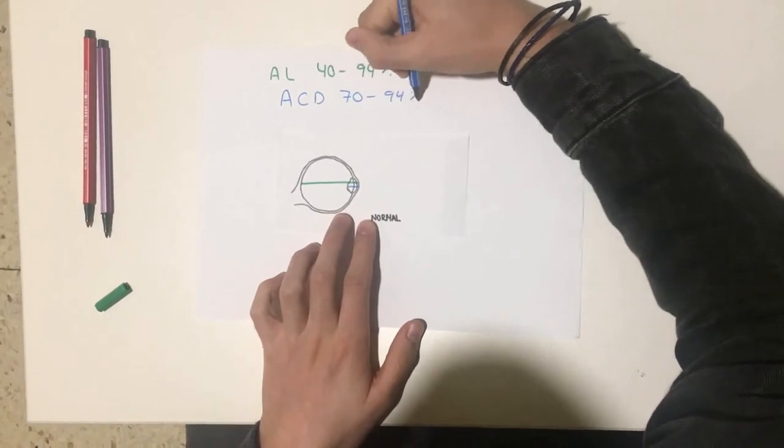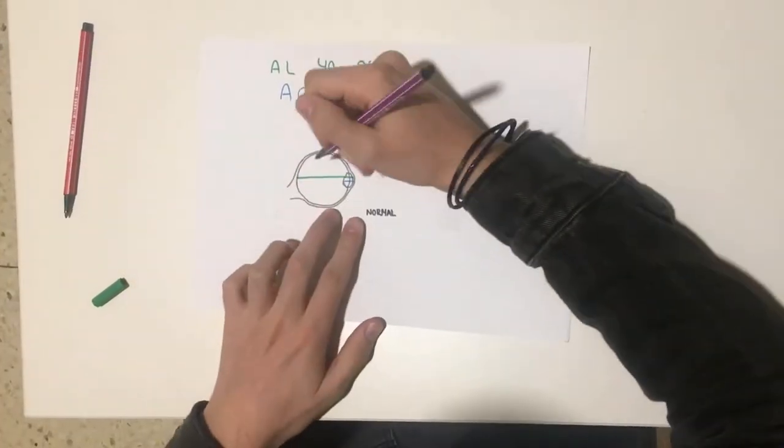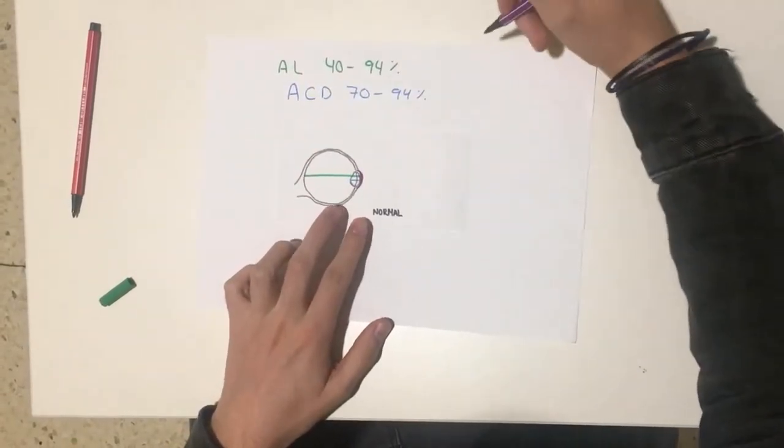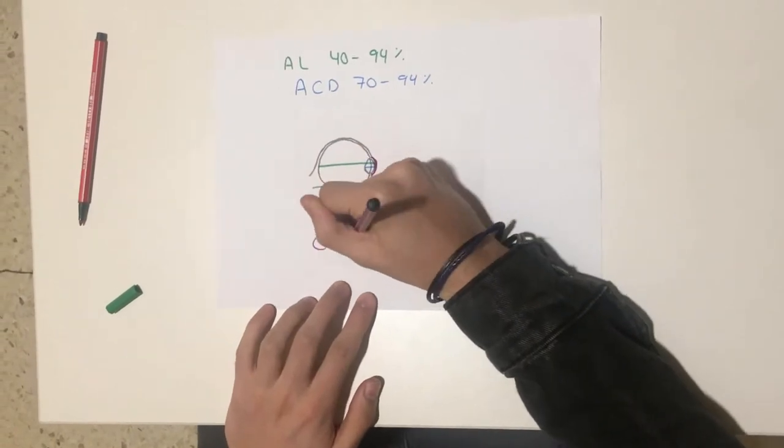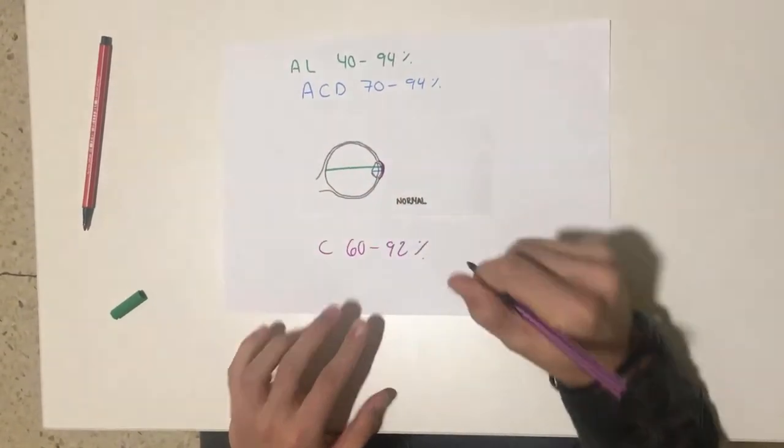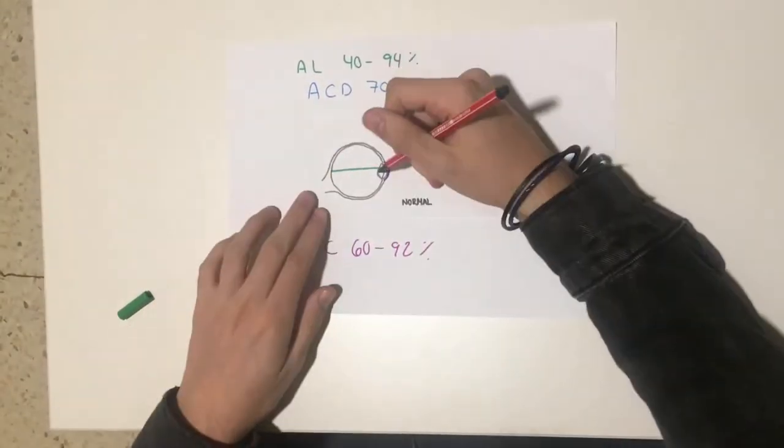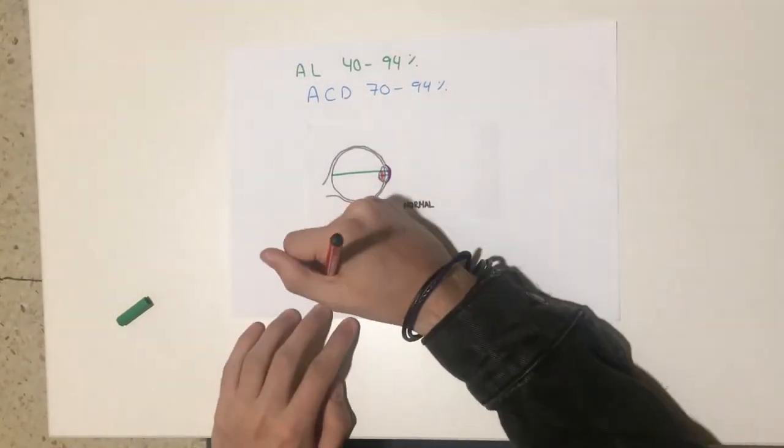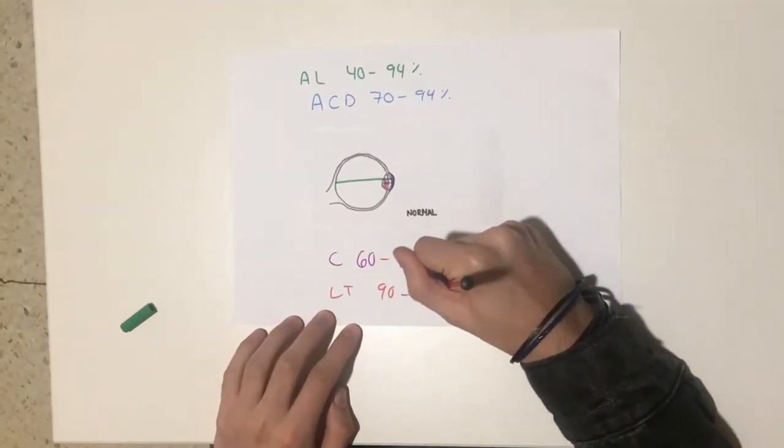Moreover, as axial length includes anterior chamber depth, this one has the same effect on refraction. On the other hand, corneal curvature steepness is more likely to result in myopia, and increased lens thickness correlates with increased myopia, and these rays represent the heritability of the different ocular components.